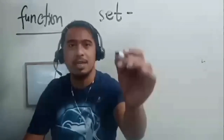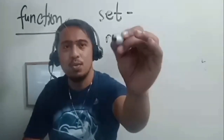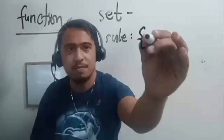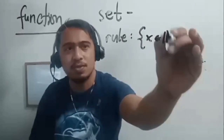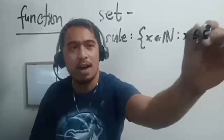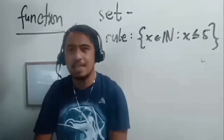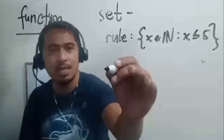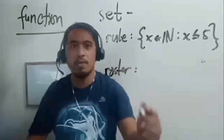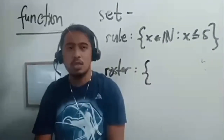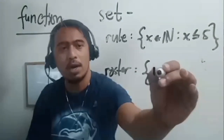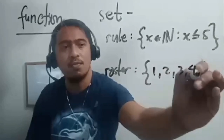A set can be described in two ways. Using the rule method, you describe it — for example, x is an element of the natural numbers such that x is less than or equal to 5. Or, using the roster method, you enumerate the elements — for example, those natural numbers less than or equal to 5 would be listed as 1, 2, 3, 4, and 5.